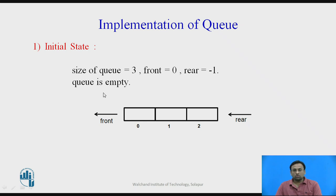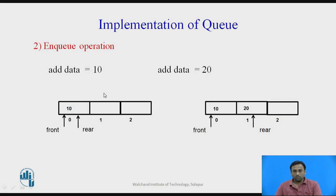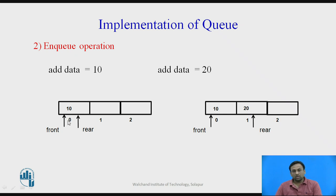This condition is known as the queue empty state. Whenever you are going to add data equal to 10, the 10 is added from the rear end and sits at position a[0]. Front remains at a[0] and rear is incremented from minus 1 to 0. Whenever you add data in the queue the rear is incremented by plus 1. So front always points towards the first element and rear always points towards the last element.